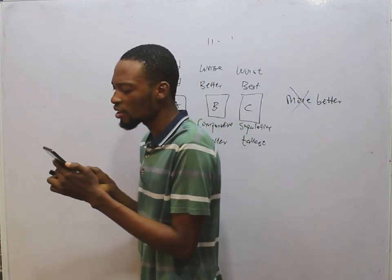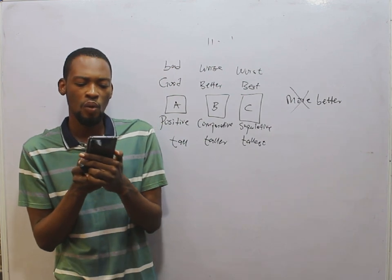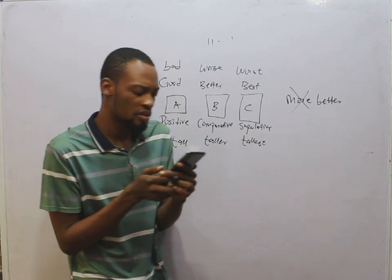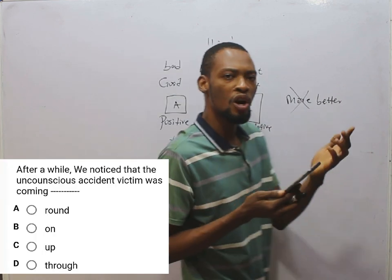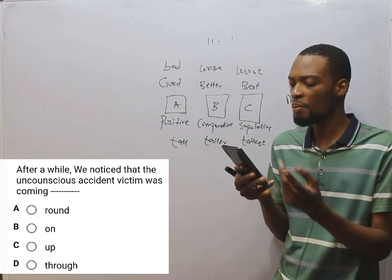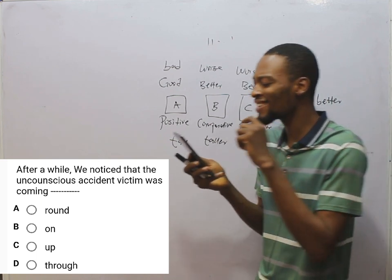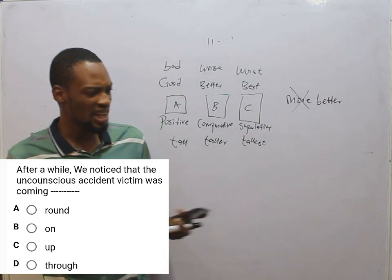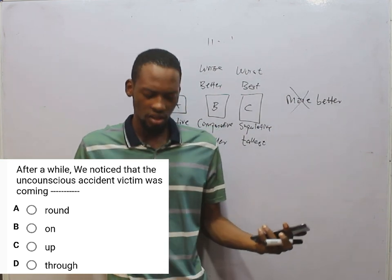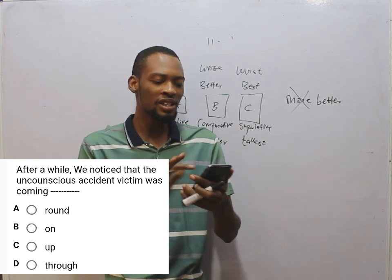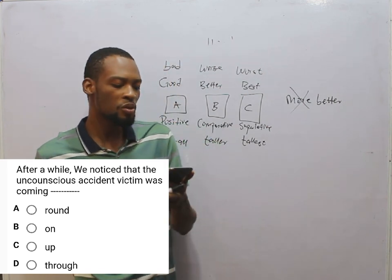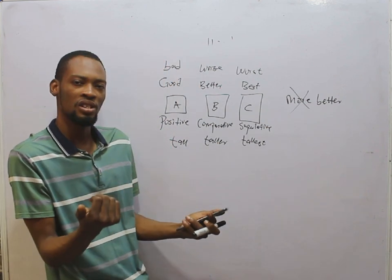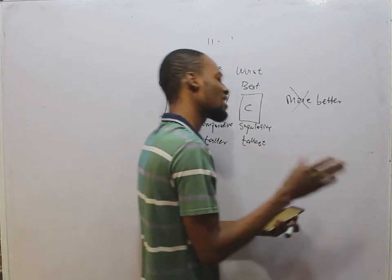After a while, we noticed that the unconscious accident victim was coming dash. The options are coming around, coming on, coming off, and coming through. When someone is unconscious and with time you notice the person starts reviving, you say the person is coming through. Coming through means to regain strength or to regain consciousness. That is the most appropriate answer.